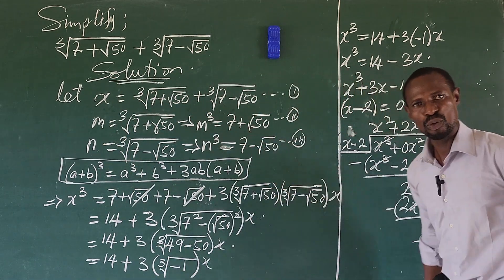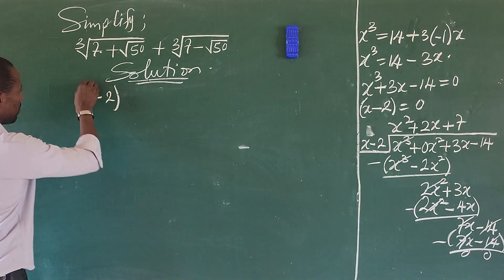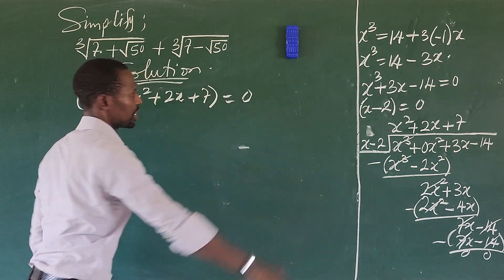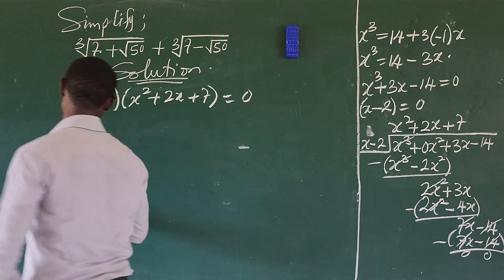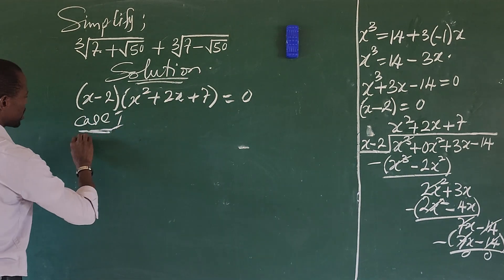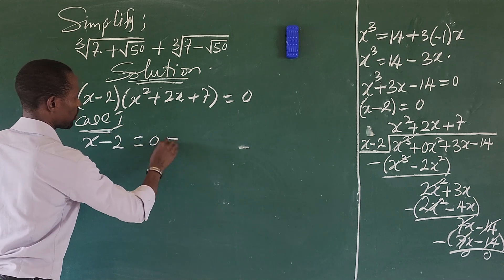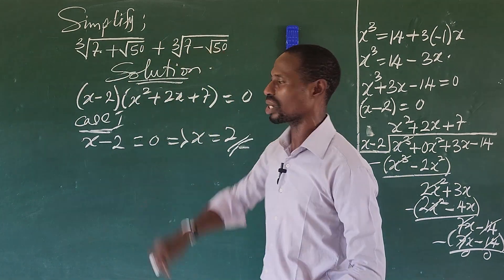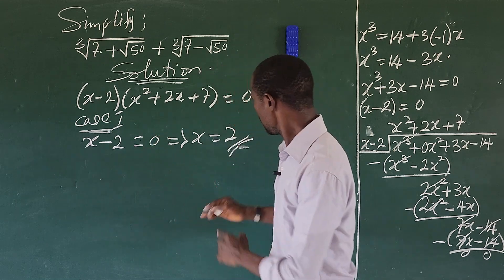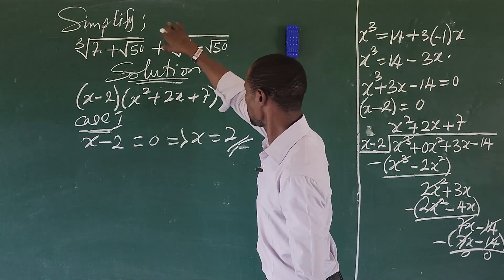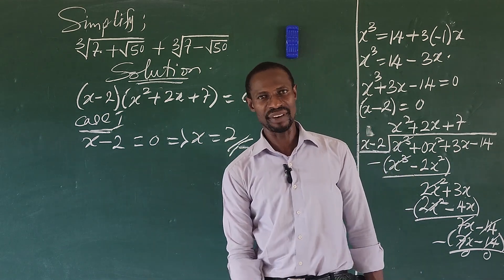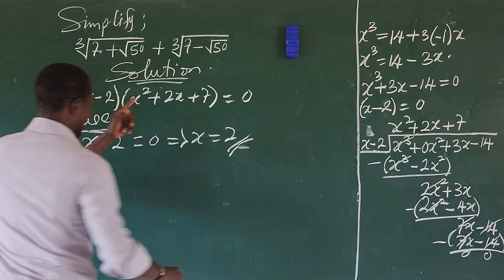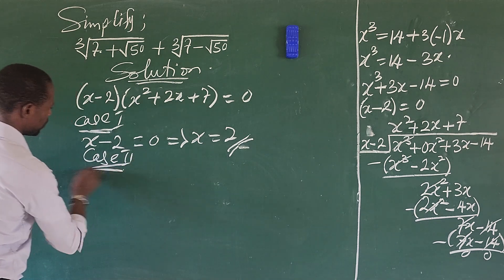Combining the factors: (x − 2)(x² + 2x + 7) = 0. Case 1: x − 2 = 0 gives x = 2. This is the real answer. If you plug the original expression into a calculator you get approximately 2.61, but simplifying gives x = 2 as the real value.